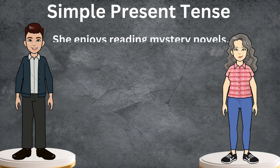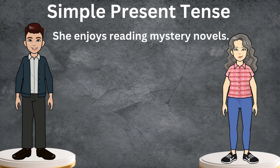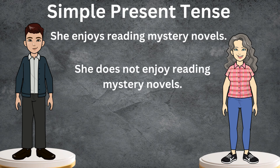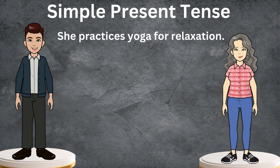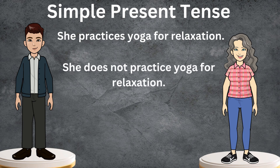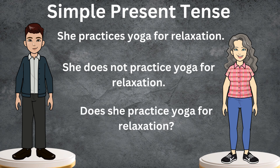Our next sentence would be: she enjoys reading mystery novels. The negative sentence would be: she does not enjoy reading mystery novels. Or the interrogative one would be: does she enjoy reading mystery novels? Let's make a new one: she practices yoga for relaxation. The negative sentence would be: she does not practice yoga for relaxation. Or: does she practice yoga for relaxation?